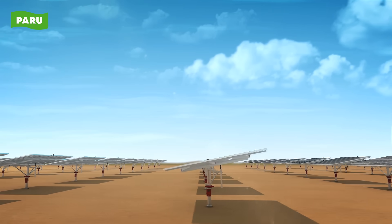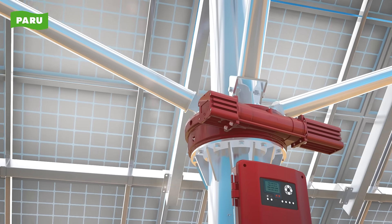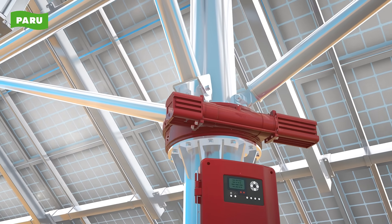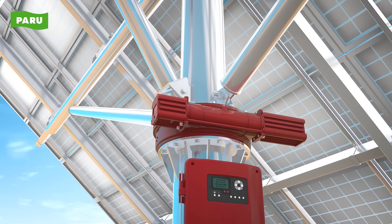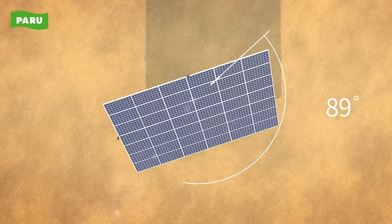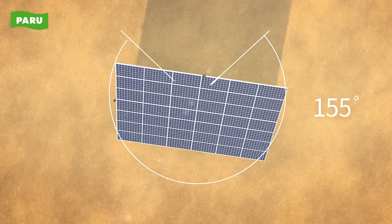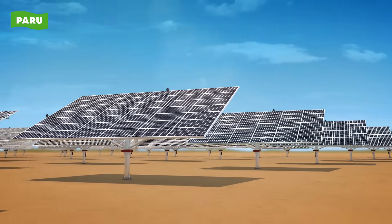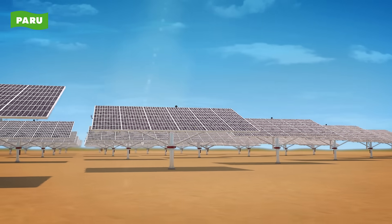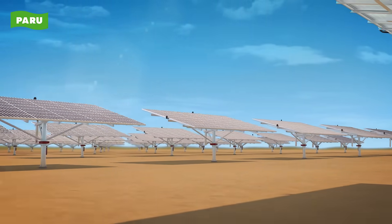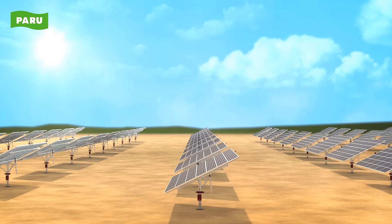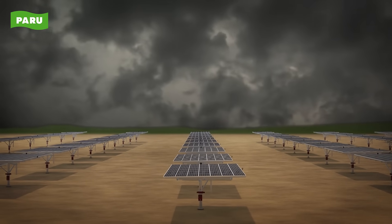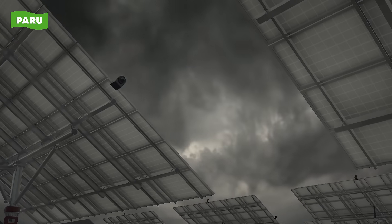The slew drive tracks solar orientation with strong mechanical strength and durability. Its driving range is up to 270 degrees from zero degrees, perfectly tracking the Sun's movement from east to west according to sunrise and sunset.